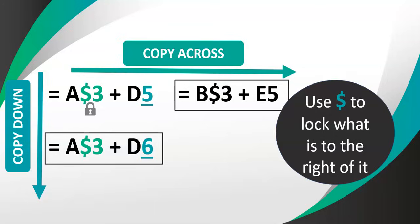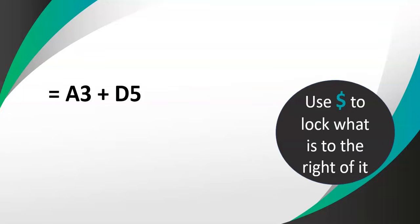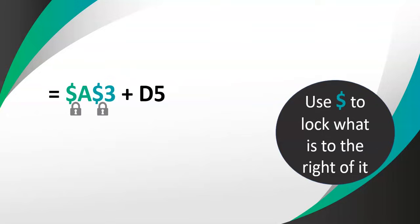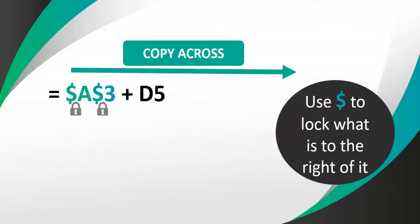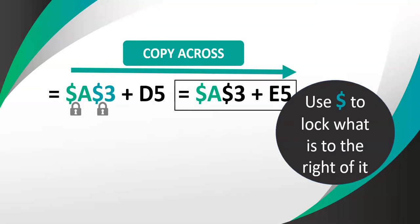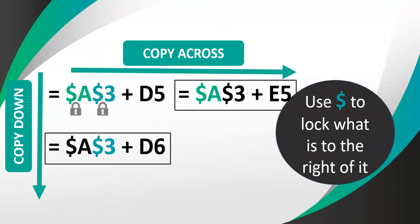You can also put a lock on both the letter and the number. If that's the case, copying across won't change it and copying down won't change it either — that's how to make sure it never changes. So if I copy across, the A won't change, the 3 wouldn't have changed anyway, but the other cell D5 does change to E5. And if I copy it down, the 3 will not change and the A is unaffected, but D5 changes — because only the locked references stay fixed.